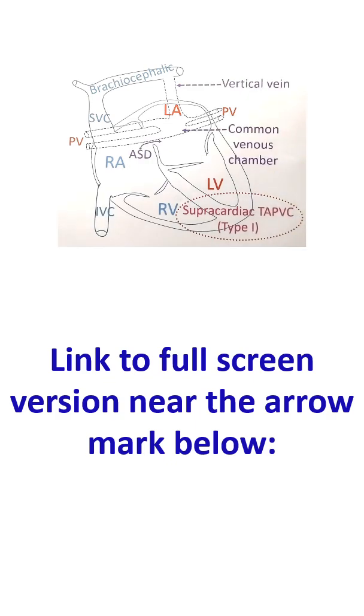This is supracardiac TAPVC. Pulmonary veins join a common venous chamber. From there, it rises as a vertical vein and joins the brachiocephalic vein. From the brachiocephalic vein, pulmonary venous return reaches the right atrium. That is supracardiac TAPVC. When the vertical vein is dilated, the brachiocephalic artery is also dilated.